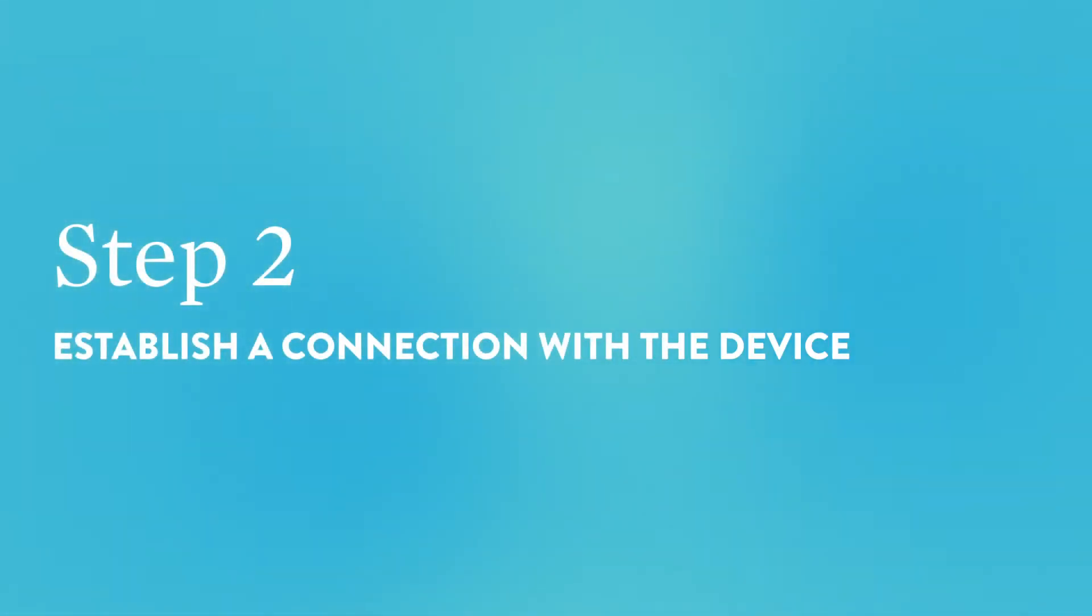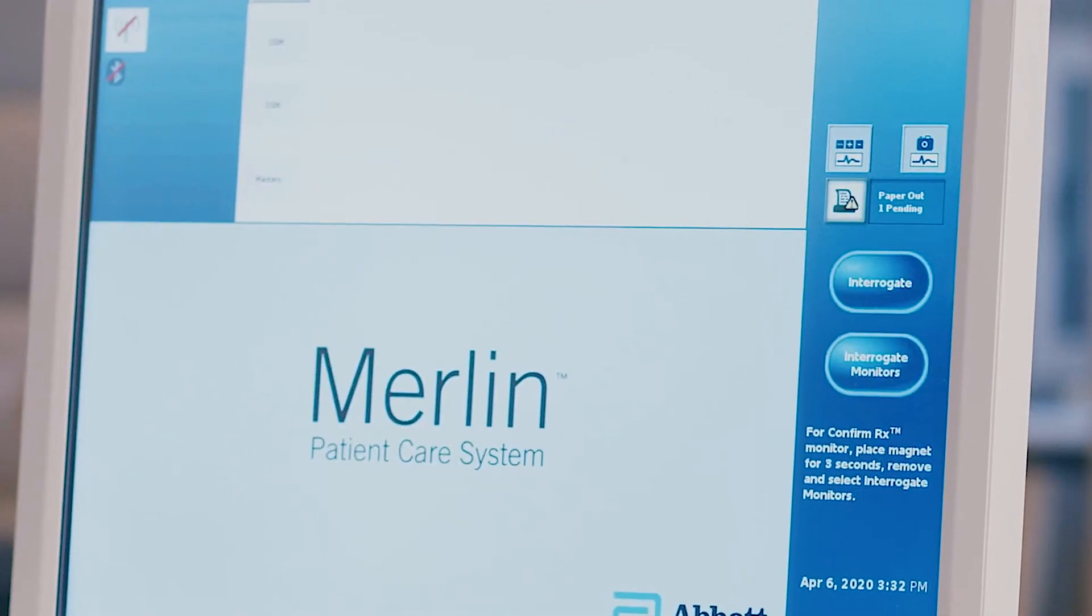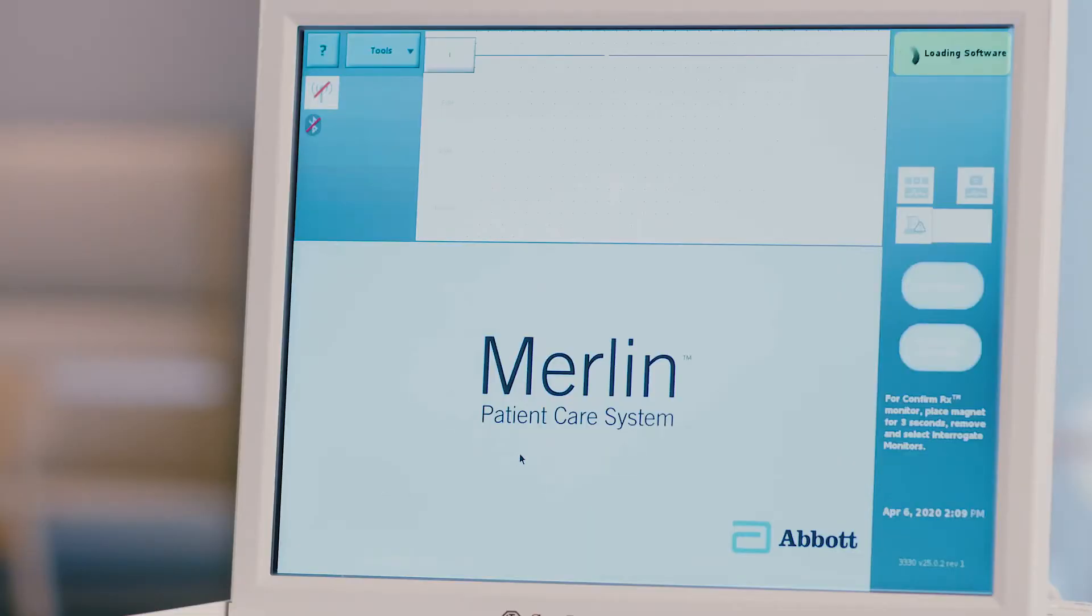Step 2: Establish a connection with the device. Place the wand over the patient's device. Press the interrogate button on the right-hand side of the programmer screen. The programmer will begin to load the device software. The upper right-hand corner of the screen will note the progress.